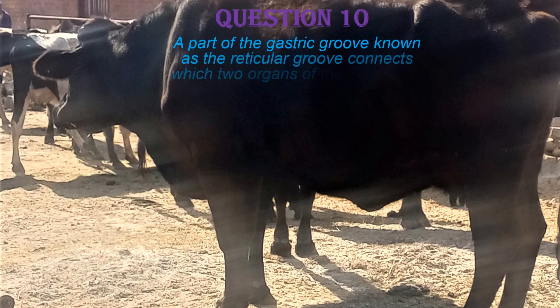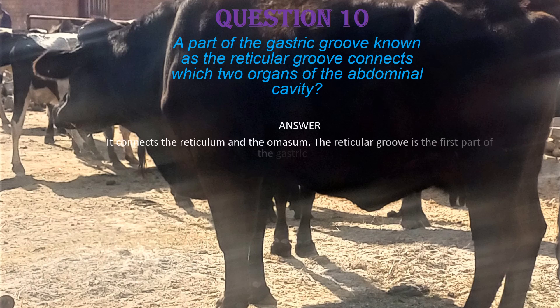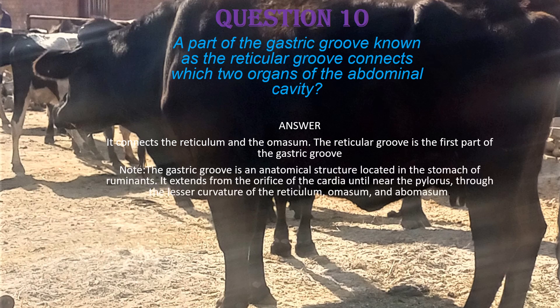Question ten: a part of the gastric groove known as the reticular groove connects which two organs of the abdominal cavity? The answer is it connects the reticulum and the omasum. The reticular groove is the first part of the gastric groove, an anatomical structure located in the stomach of ruminants — particularly young ruminants such as calves and kids — extending from the orifice of the cardia to near the pylorus through the lesser curvature of the reticulum, omasum, and abomasum.